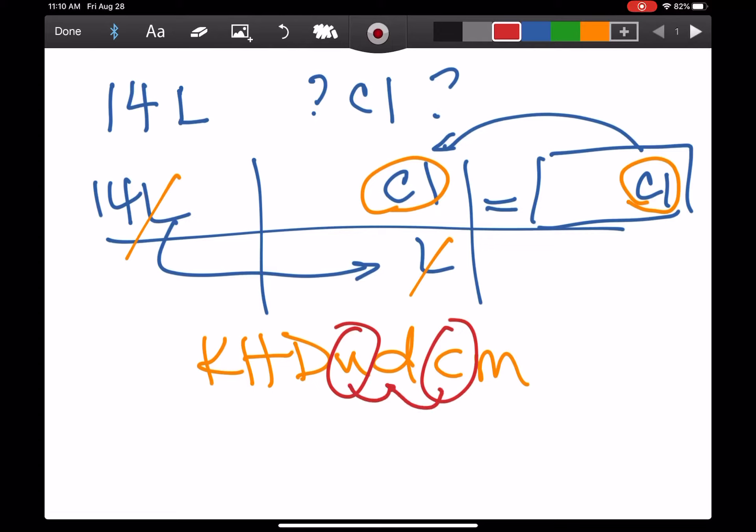So we're going to go 10 times 10, so that means one liter is 100 centiliters. How did I know where to put the one? The larger one, the one farther to the left, always gets the one so I don't have any decimals. Now I have 14 times 100, which is 1400 centiliters.